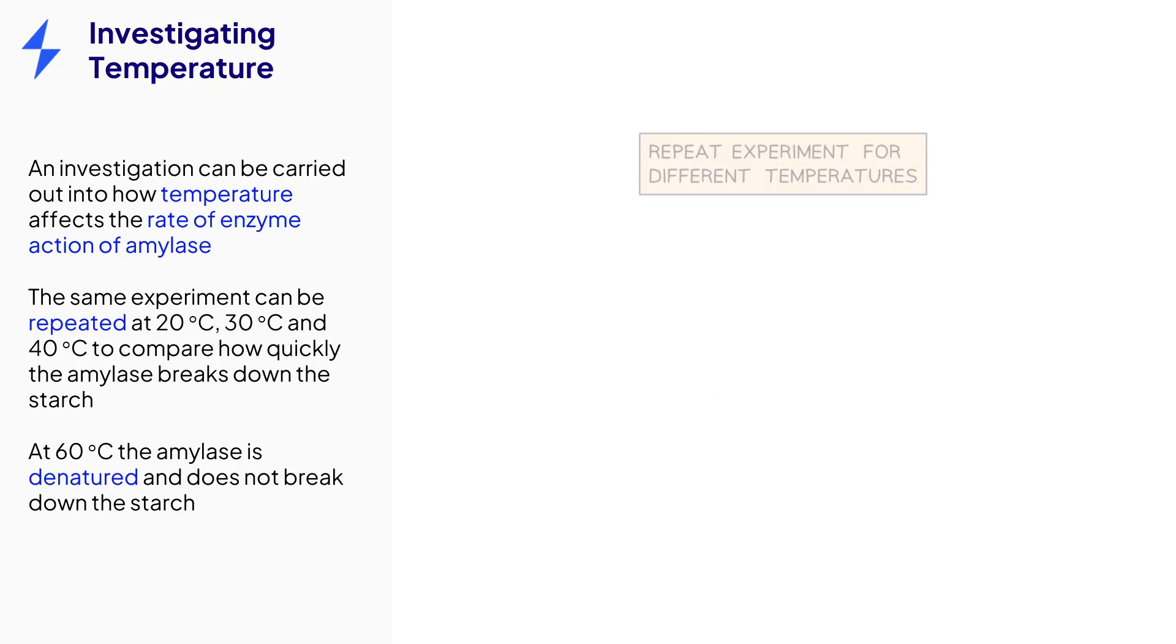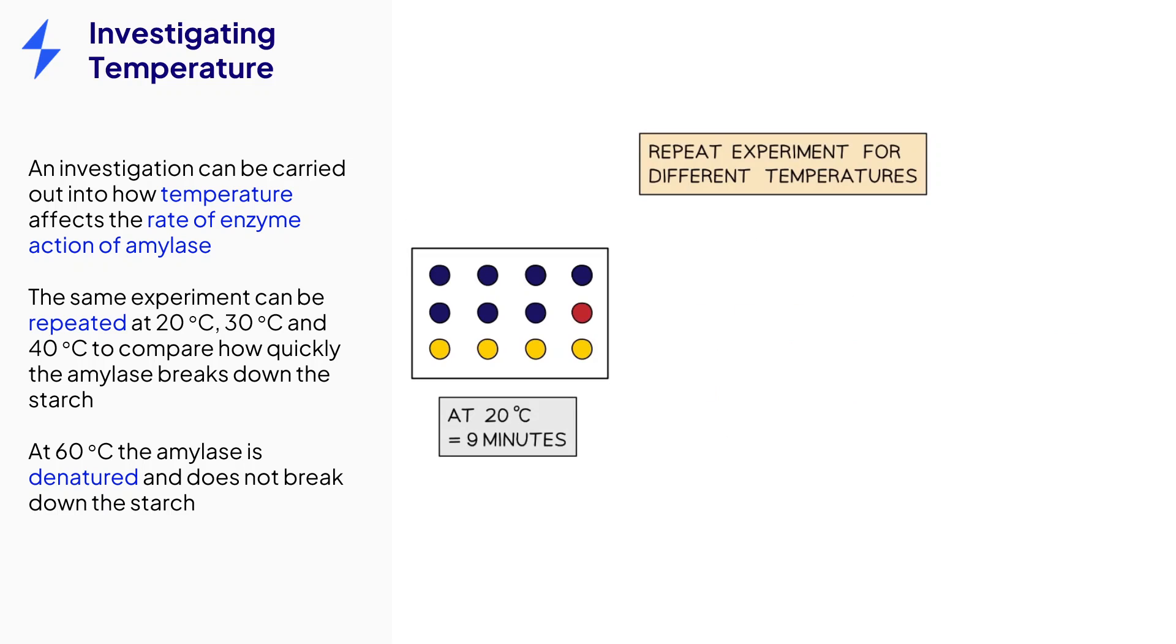The next step is to repeat this entire process at different temperatures. At 20 degrees, the amylase is very slow to break down the starch because of the low kinetic energy in the solution and few collisions between the active site and substrates. It takes 9 minutes for the iodine to remain orange.